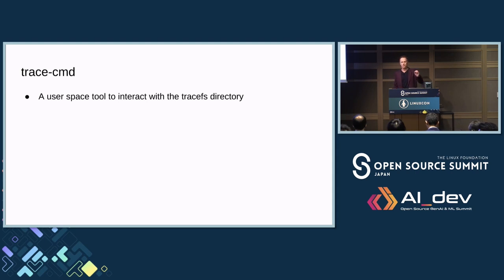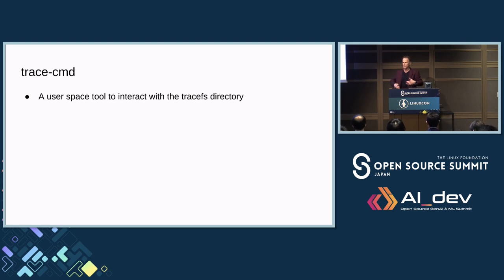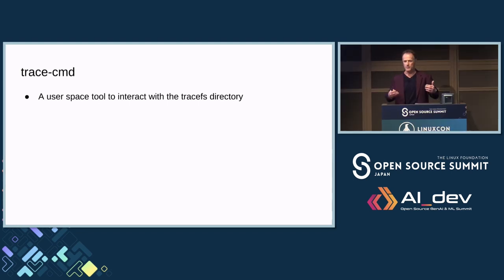I'm coming from the embedded world way back, so I really have a sweet spot in my heart for the embedded world. I like busybox controlling the whole tracing infrastructure. Almost everything in the tracing infrastructure in the Linux kernel can be done from a simple busybox command line — echo, cat, stuff like that.